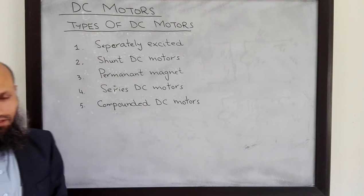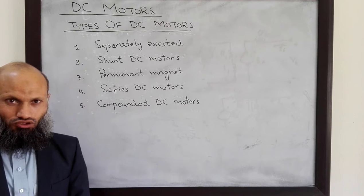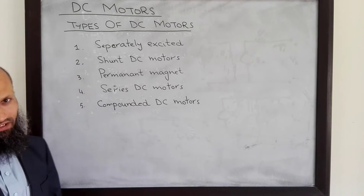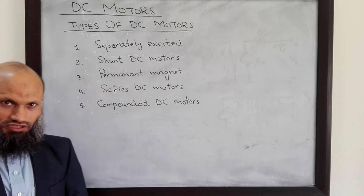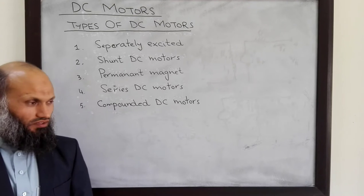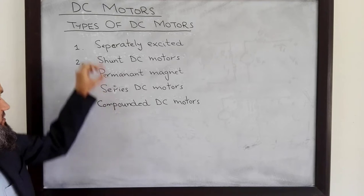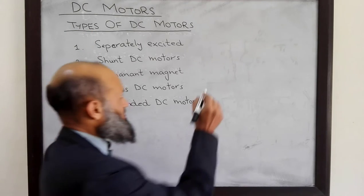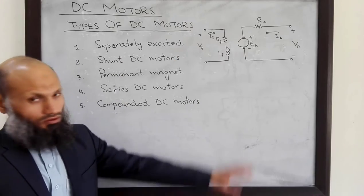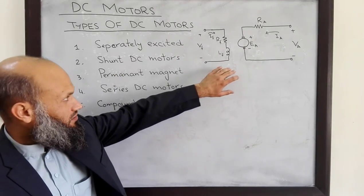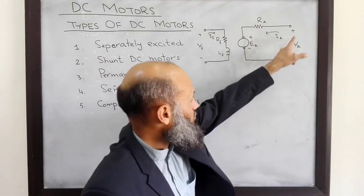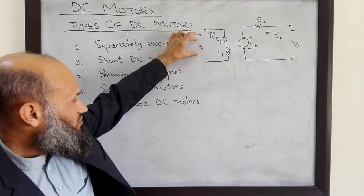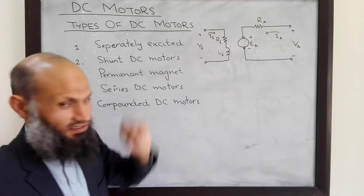In separately excited DC motors, there are two voltage sources: one voltage source to excite the field windings and another voltage source to excite the armature windings. The equivalent electrical circuit of separately excited DC motors is given by this diagram, showing one voltage source exciting the armature circuit and another exciting the field circuit.